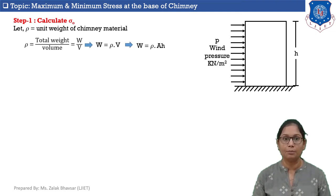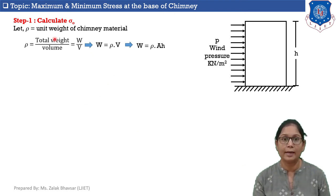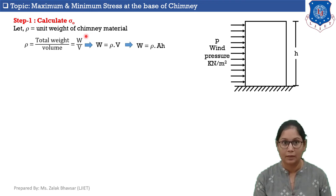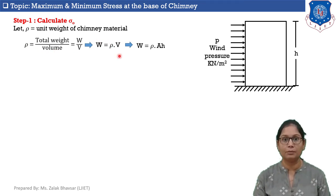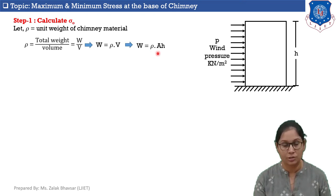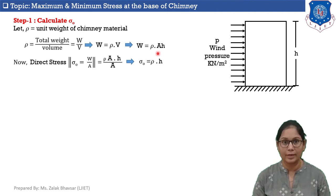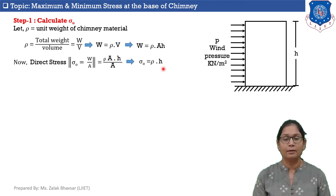Step number one: calculate sigma zero, which is the direct stress. Let rho be the unit weight of the chimney material, then rho equals total weight W upon volume V, so W equals rho times V. Since volume V equals area times height, W equals rho times A times h. Therefore sigma zero equals W upon A, which gives sigma zero equals rho times h. This is the equation for sigma zero we will use in our numerical.